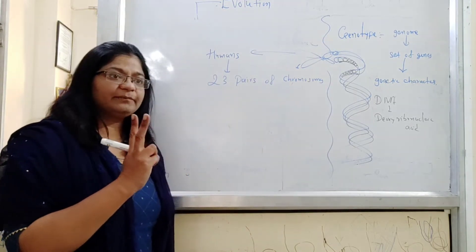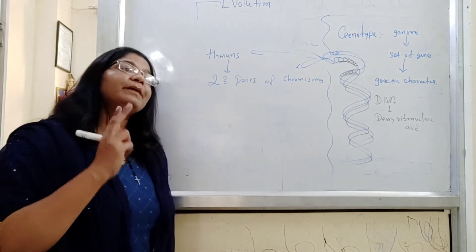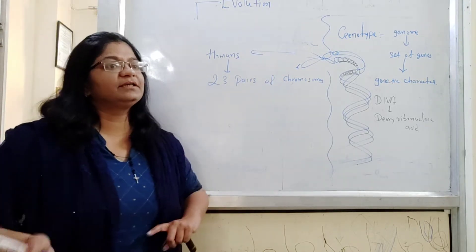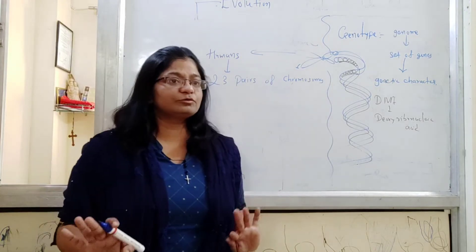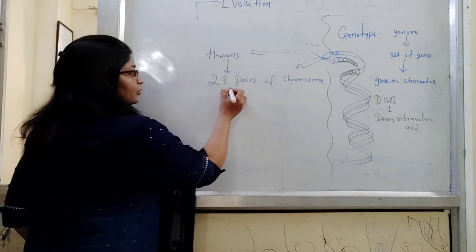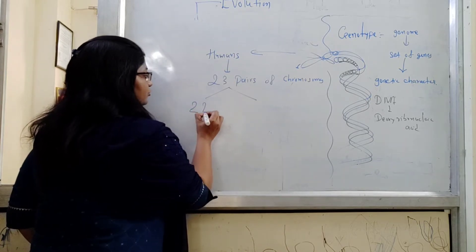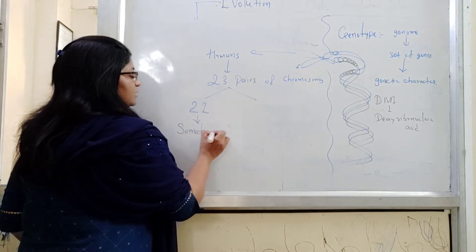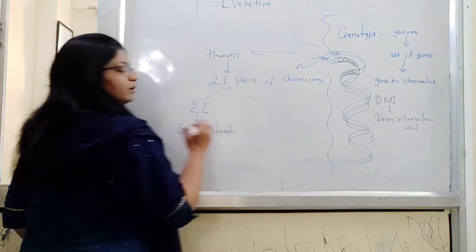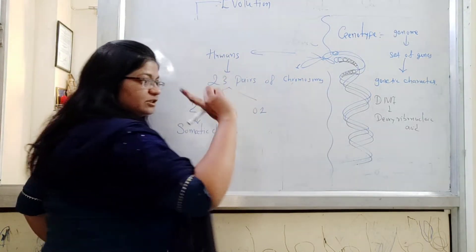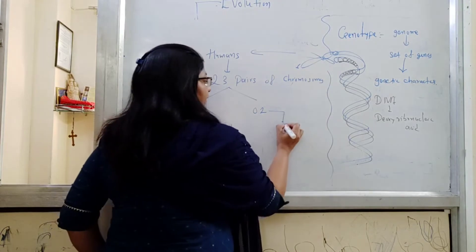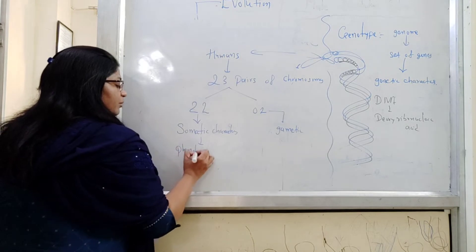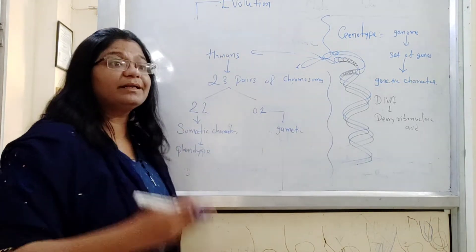This chromosome - as I told you that two copies are there, it's because of the pairing, homologous chromosomes. Out of these, the 22 pairs are the chromosome which are responsible for the somatic characters, and only one pair, matlab ki only 2 chromosome, last wale, 45 and 46, are gametic characters. Somatic characters means the phenotype or physical characters which are the characters of our body, structures of our body.